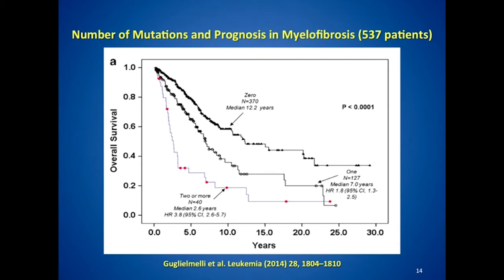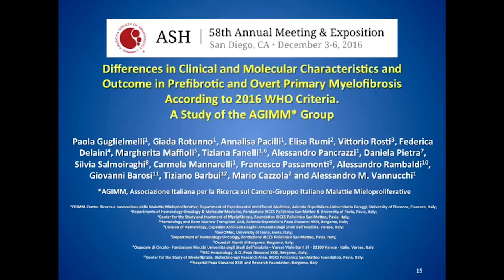I follow many patients who, based upon this scoring system, have multiple mutations but never progress over 10 to 15 years. These survival estimates are averages and should not be taken as total dogma. Individual patients have to be treated on an individual basis.